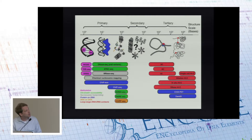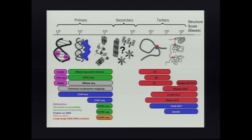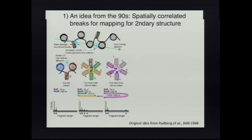Here's chromatin structure at all length scales — one base, 10, 100, etc. There's a big gap right at the level of kilobases. How is chromatin folded at the level of hundreds to thousands of bases? I think this is really a missing portion of our understanding of the topology of DNA. This is the length scale of enhancers and transcription start sites. There are lots of methods for looking at primary chromatin sequence, and all these tertiary things, but there's this big gap.